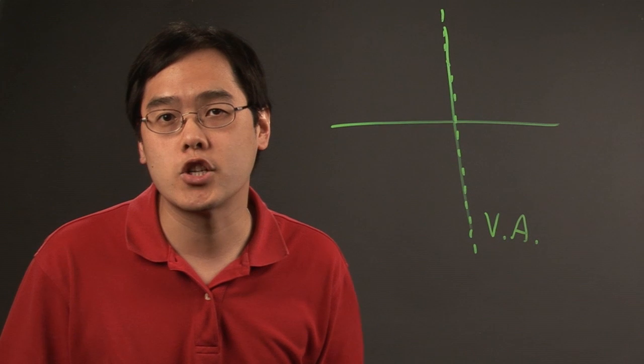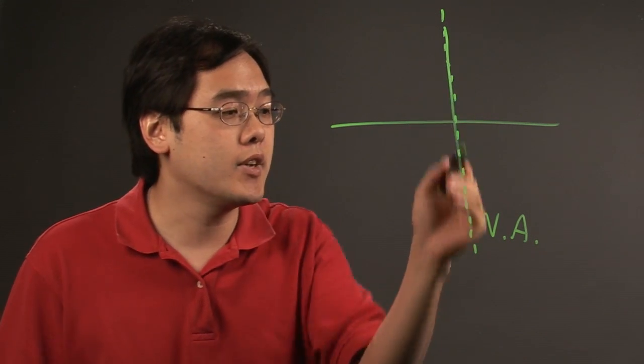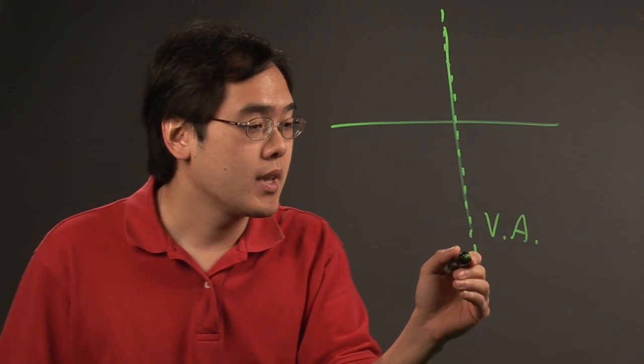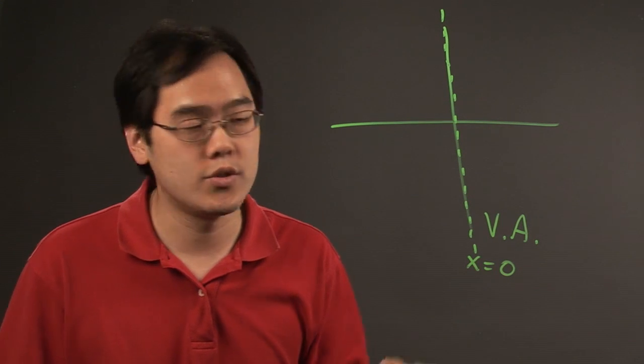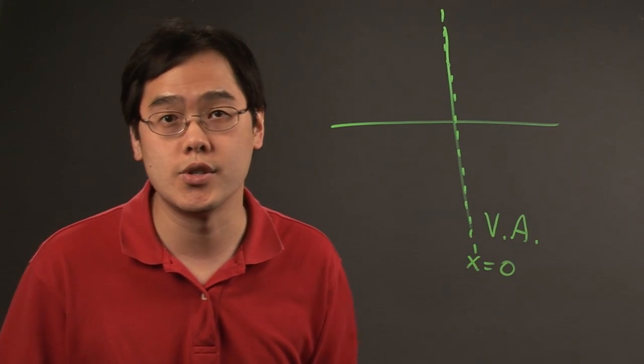Now this happens with rational functions all the time, but specifically the y-axis is also the vertical line x equals zero, so the vertical asymptote would occur at x equals zero.